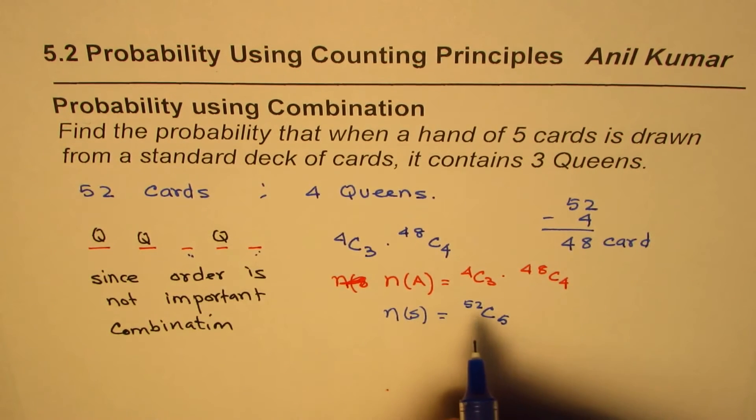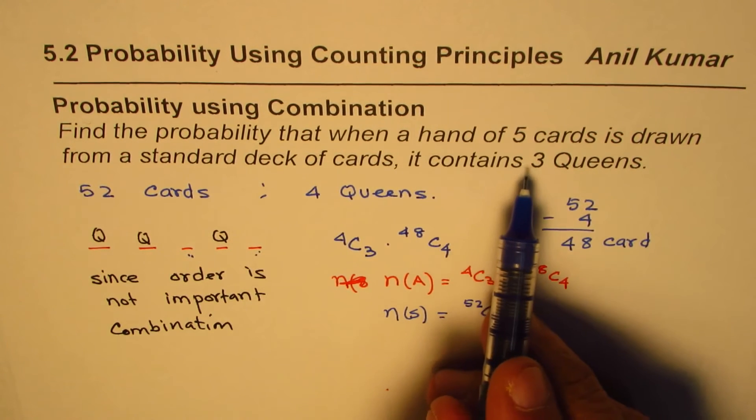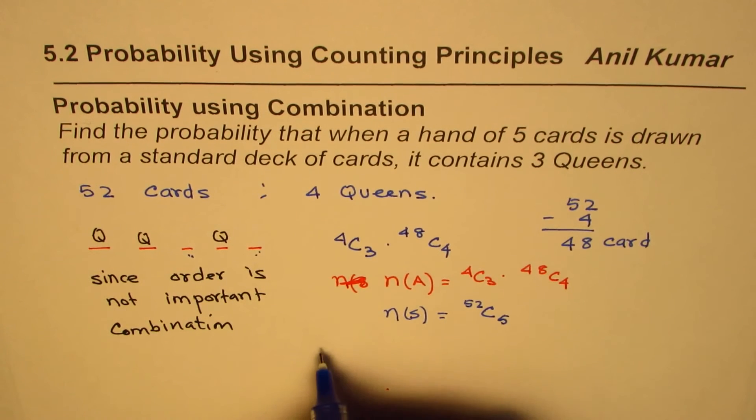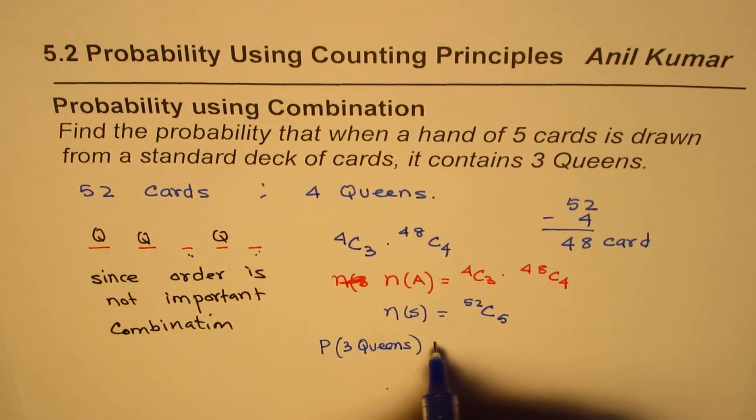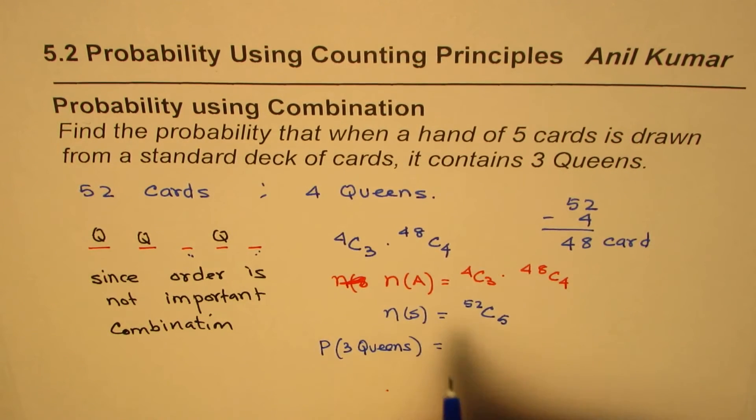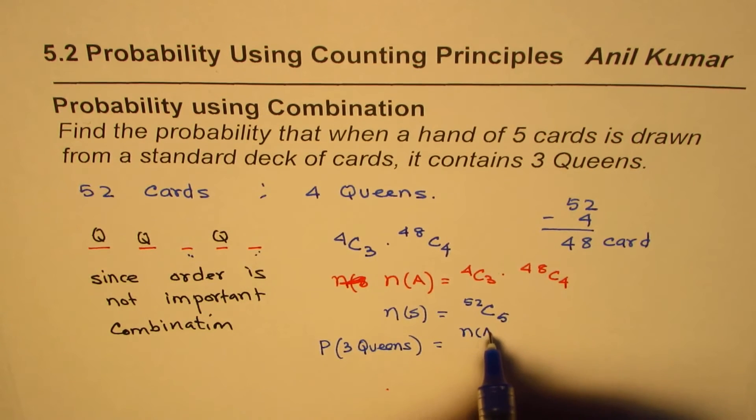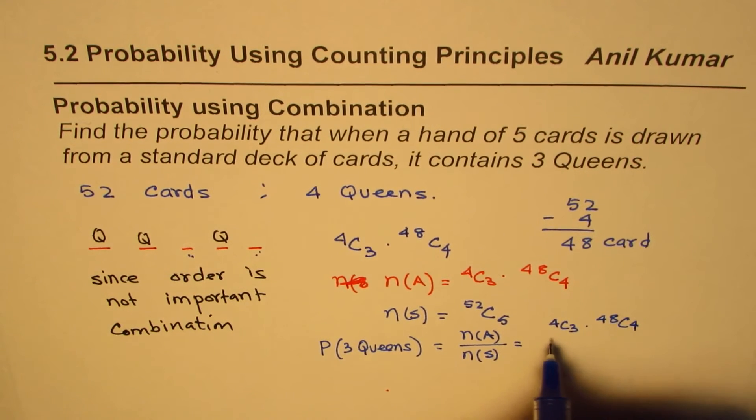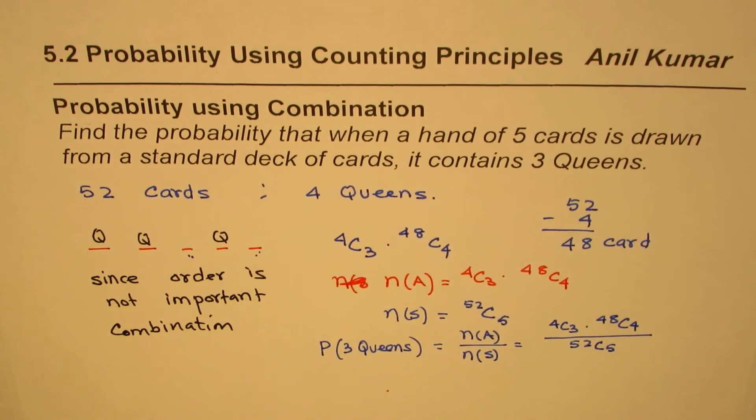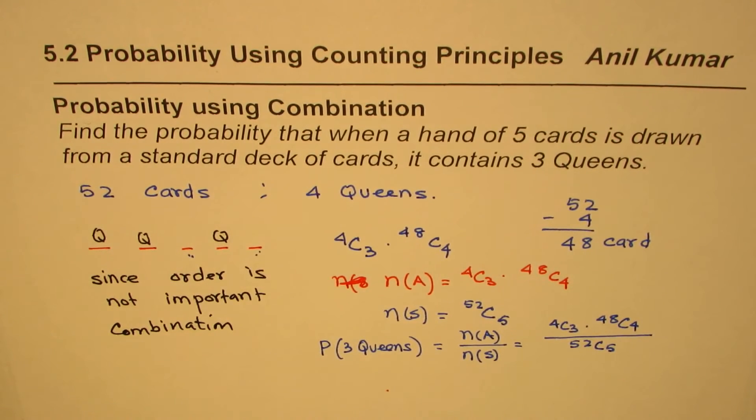The probability of selecting 3 queens from a deck of cards is the ratio of favorable outcomes to total number of outcomes, which is 4C3 times 48C4 divided by 52C5. That is the answer for us.